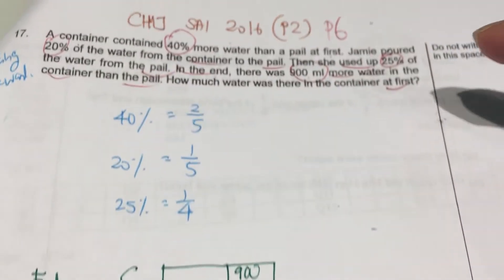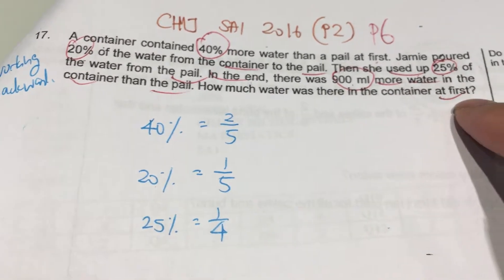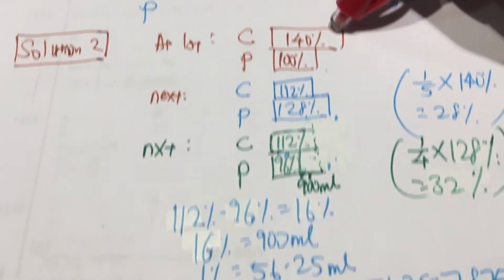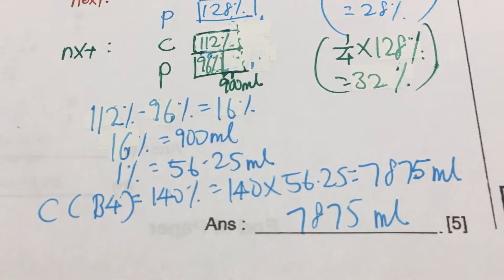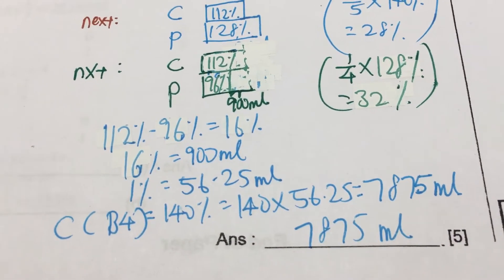And they're asking how much water was there in the container at first. So at first, it's actually 140%. So times 140 to give you the answer. Thank you. Can you get that?